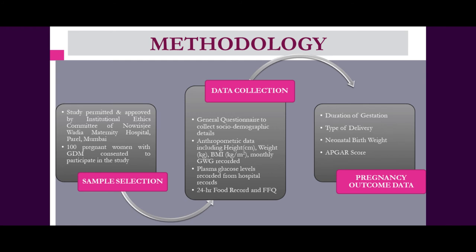For the methodology, we first took the permission and approval of the Institutional Ethics Committee of Navarrojji Wadiya Maternal Hospital, Parel, Mumbai — a hospital that especially caters to women of low socio-economic group. 100 pregnant women with GDM were selected and gave consent to participate. Data collection used a general questionnaire for socio-demographic details, anthropometric data including height in centimeters, weight in kg, and BMI in kg/m², with monthly gestational weight gain records maintained. Plasma glucose levels were recorded from hospital records. A 24-hour food record and food frequency questionnaire were also administered to collect dietary habits and intake data.